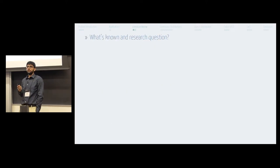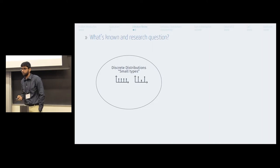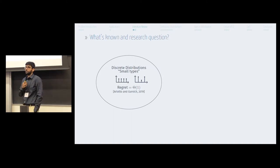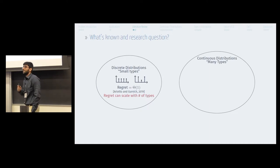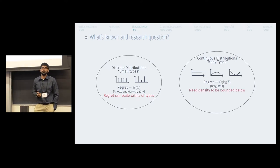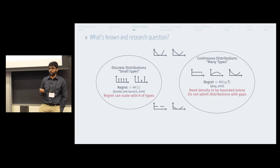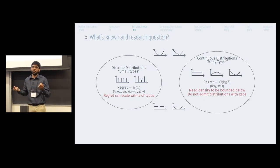Before motivating the research question, let us look at what is already known. For discrete distributions — distributions over a finite support — the award-winning work of Alotu and Gowicz shows that the regret is constant: it does not scale with the time horizon T or budget B. However, the regret can scale with the number of types. On the other extreme, for continuous distributions with well-defined densities — referred to here as many types — recent work of Bray shows that regret scales as log T. However, the density needs to be bounded below, so you cannot admit densities that are zero, and you cannot admit distributions with gaps, which naturally arise in discrete distributions.